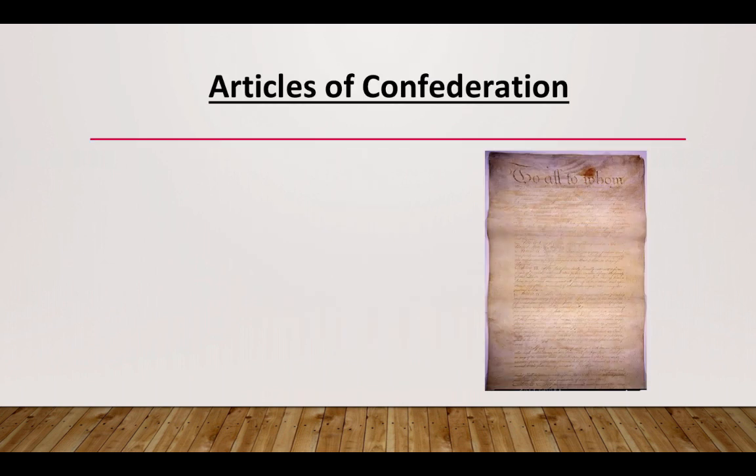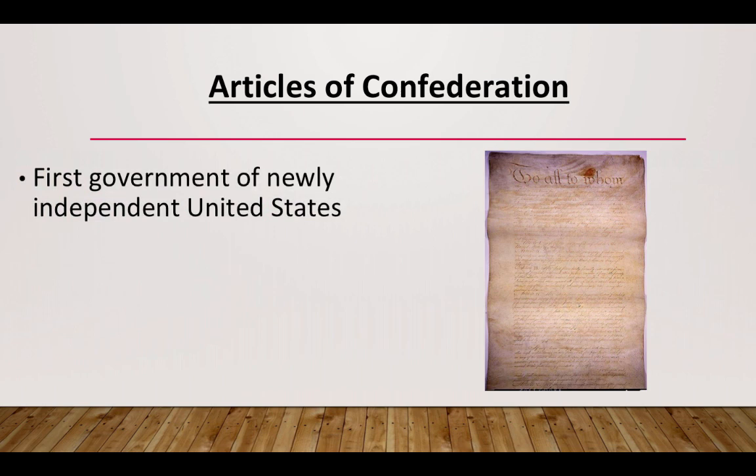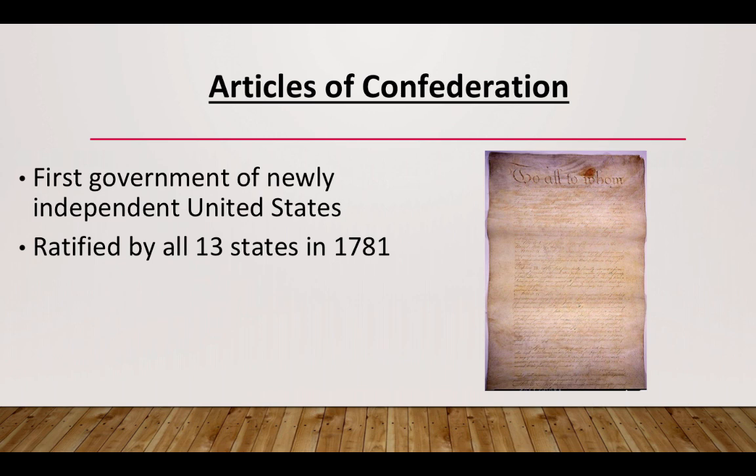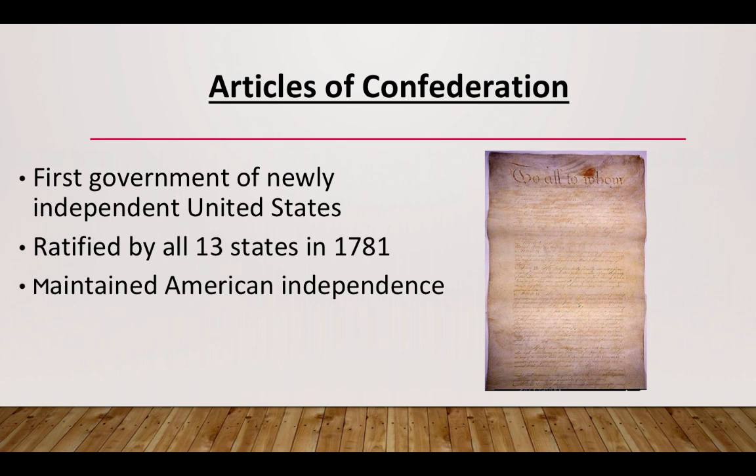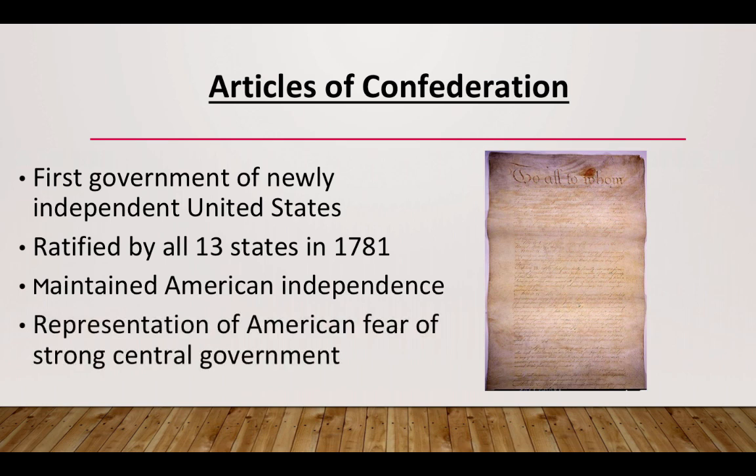The Articles of Confederation — we want you to think of one word when describing them, and that word is weak. This is the first government of the newly independent United States, the government that was in effect during and after the American Revolution. It predates the Constitution, was ratified by all 13 states in 1781, and it was a representation of American fear of a strong central government.